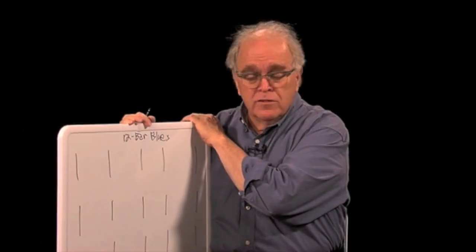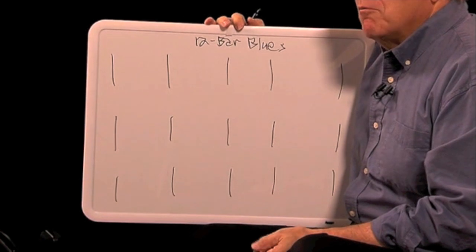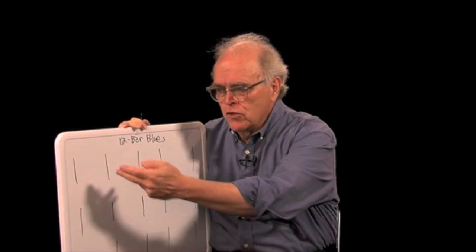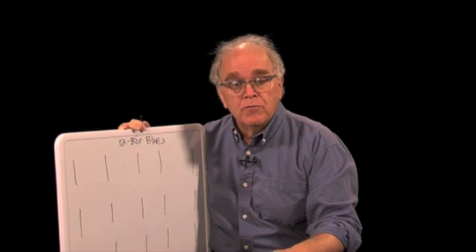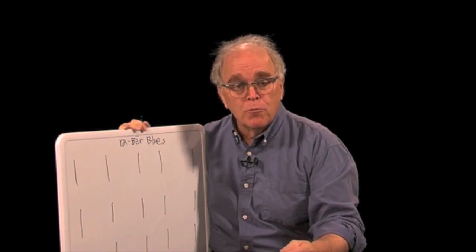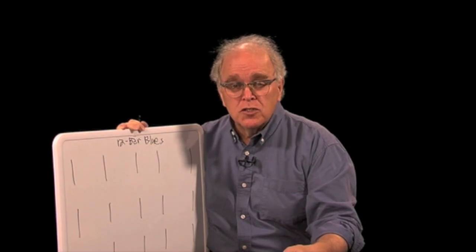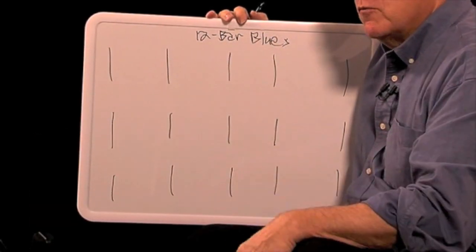Let's take a look at the 12-bar blues now, the most commonly used blues form. I've got a whiteboard here where I've got the 12-bar blues indicated. First of all, bar — what's a bar? Bar and measure are synonymous if you've ever heard the word measure used. It's the rate at which the rhythmic pulse repeats itself. A lot of times you'll have four-four, which means four beats per measure and each beat is a quarter note. So for our purposes, let's assume we've got four beats per measure — 12 bars, 12 measures, each one with four beats.